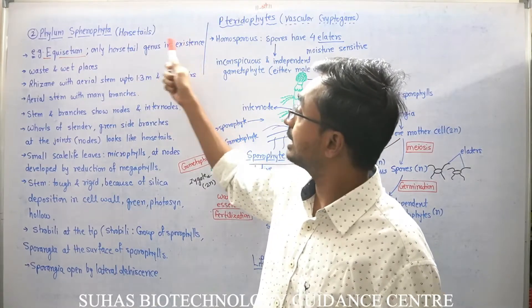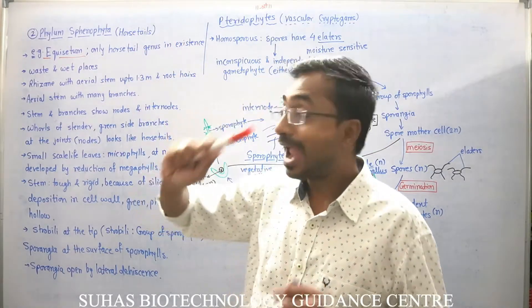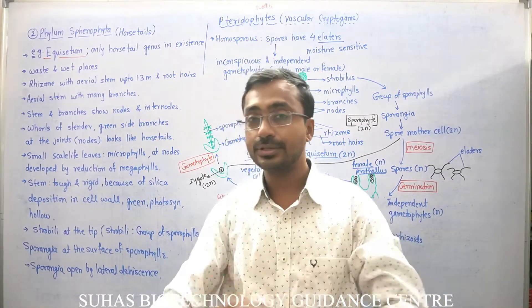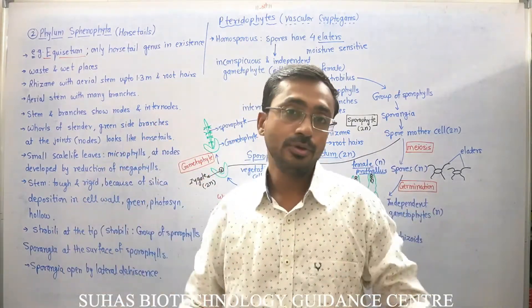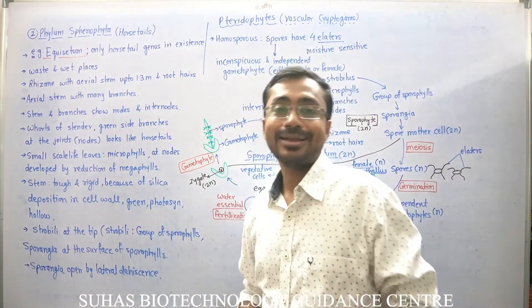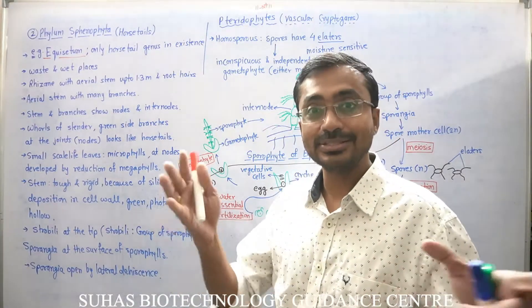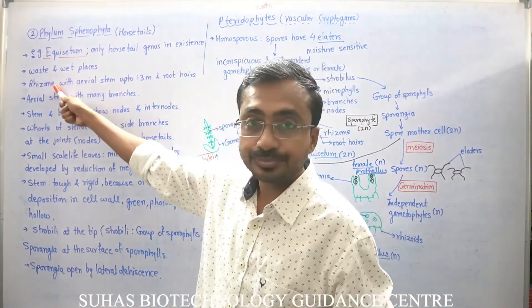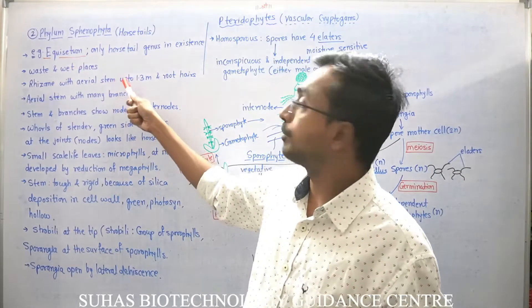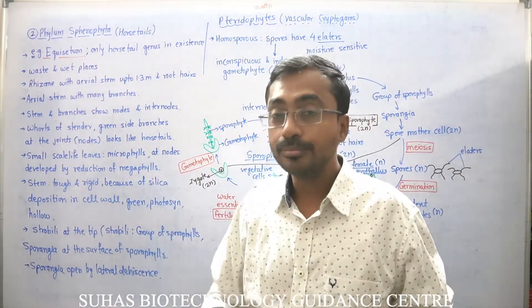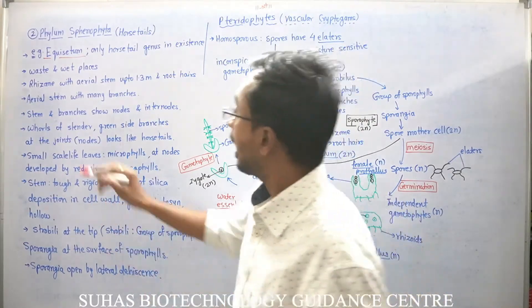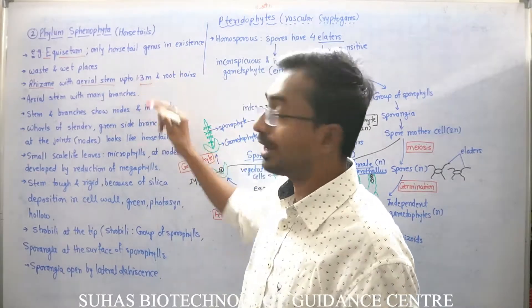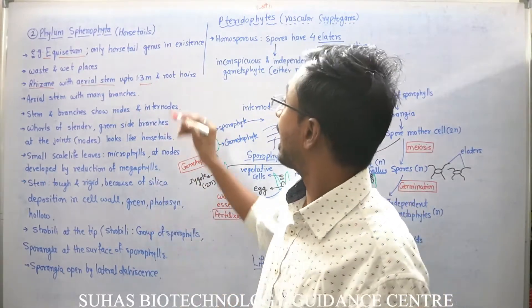The only horsetail genus in existence, and they grow in waste and wet places. It is quite useful to plant such plants in waste places. They have a rhizome with an aerial stem up to 1.3 meters. Rhizome means underground stem, and this underground stem gives rise to an aerial stem that grows up to 1.3 meters.